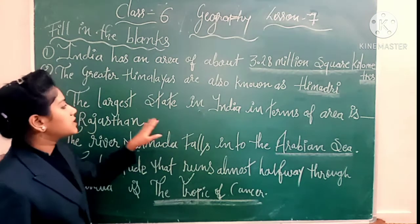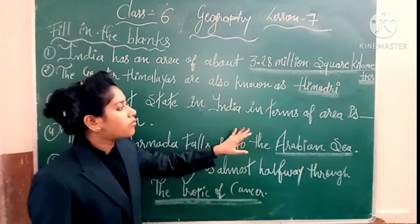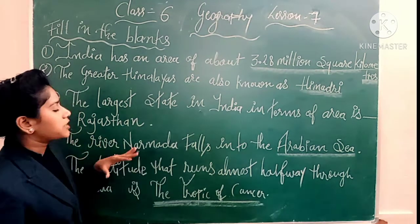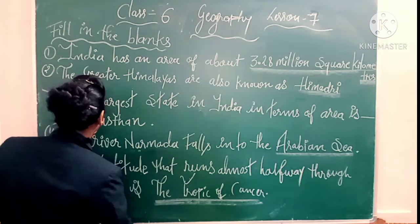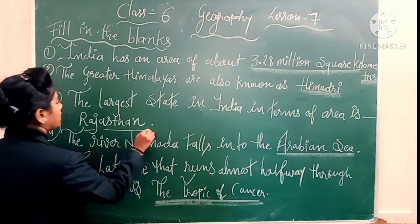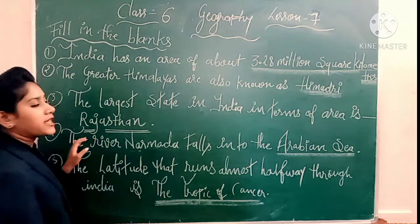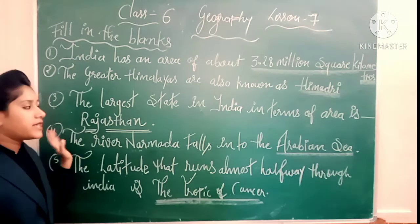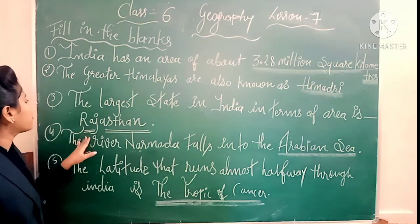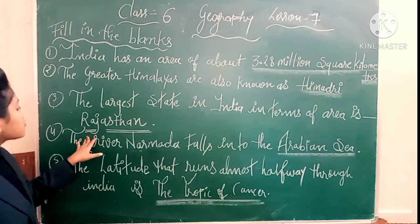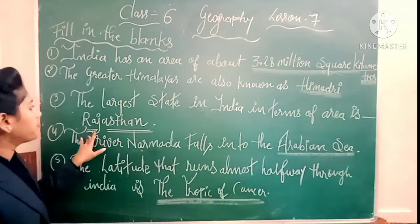Phir hai aapka third number. The largest state in India in terms of area is — dash. So the correct answer is Rajasthan. Jo dash diya hua hai aapki book pe, third number ka, wahan aap likhenge: Rajasthan.